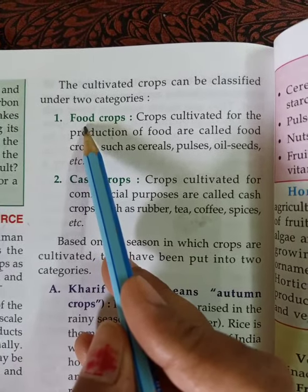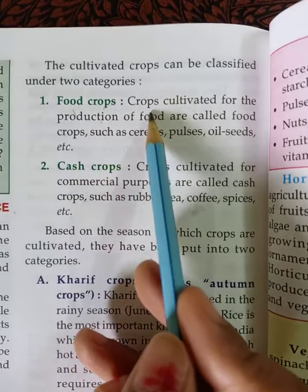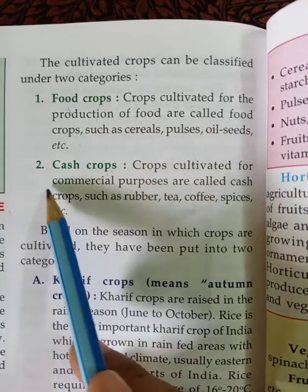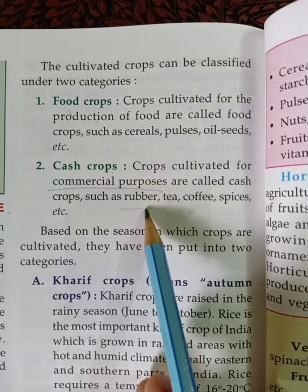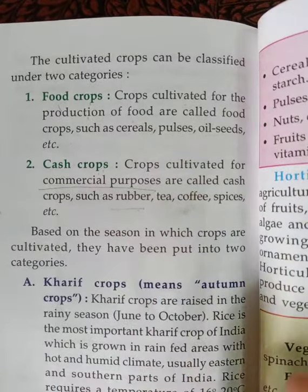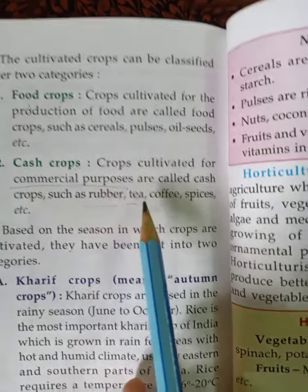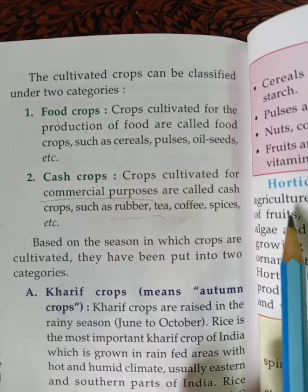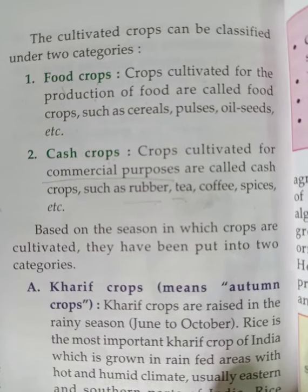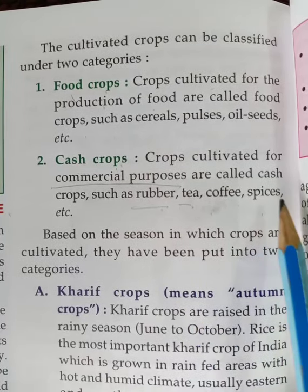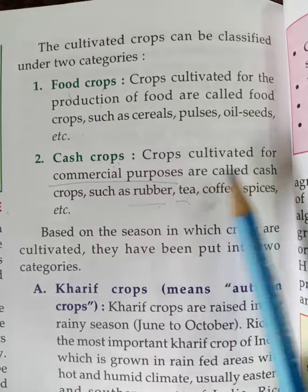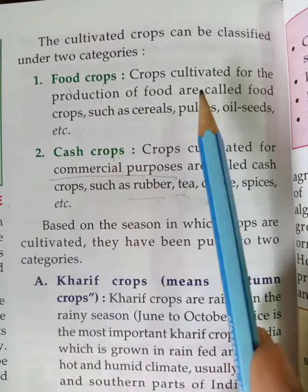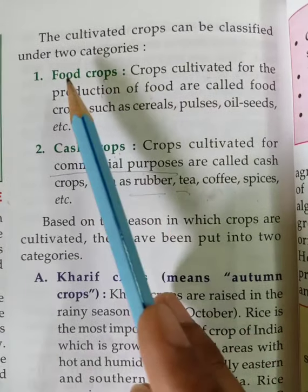Crops are of two types: food crops and cash crops. Food crops are crops cultivated for the production of food. Cash crops are used for commercial purposes — for example, rubber, which we don't eat but send to factories to make different products. Tea is transported to different countries. Spices and coffee are also grown as cash crops and exported. Crops grown for commercial purposes are called cash crops; crops grown for the production of food are called food crops.